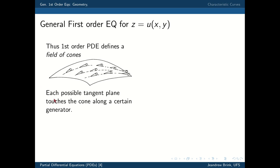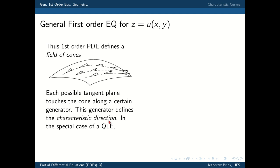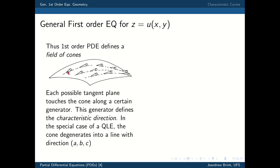Each possible tangent plane touches the cone along a certain generator — that's the direction you're picking — and this generator defines the characteristic direction. The idea of characteristic direction we've already come across when dealing with quasi-linear equations, and picking generators along a specific cone is simply a generalization of that. In the special quasi-linear case, the cone degenerates into a line with direction A, B, C. So we've generalized the characteristic direction: you start at a point, pick a direction restricted to be along the cone, move to the next point, and build up your characteristic in that way.